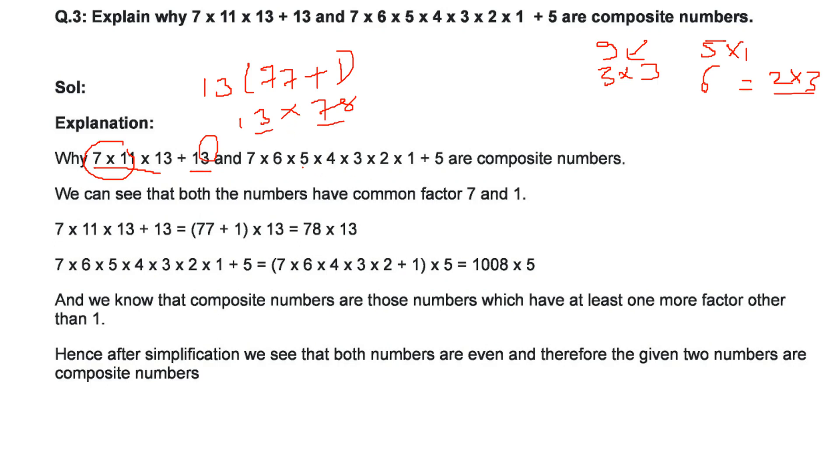Similarly, with the case of this, here we see 5 is the number which is common. So let us take 5 outside. 5 we are taking outside. Inside this will be 7 into 6 into 4 into 3 into 2 into 1, which is here. And when you take outside 5, you get 1. And when you actually multiply these, you will get 1007, add 1, that is 1008 into 5. So this is also a form of m into n. Where m and n are not equal to 1. Because the composite numbers are those numbers which have at least one more factor than other than which is 1.